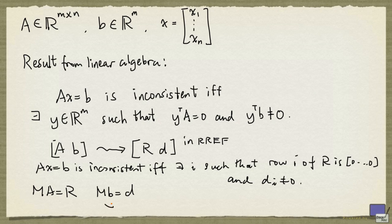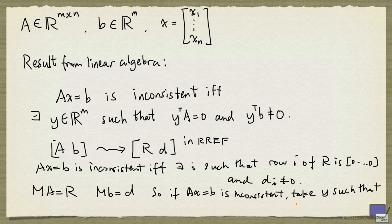So if the system Ax equal to B is inconsistent, we can simply take y such that y transpose is the i-th row of M.